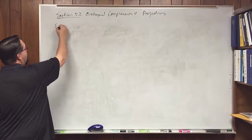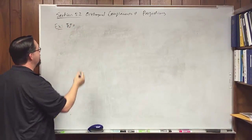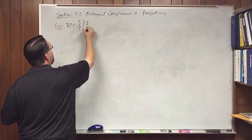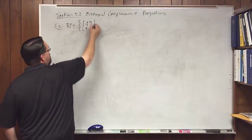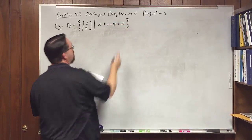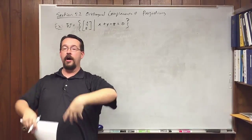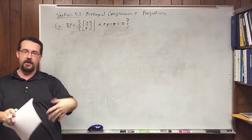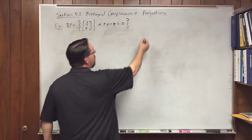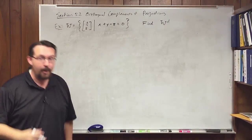Another question you may be asked is if you're given a particular space in R3 with one condition: x plus y minus z equals zero. This is a plane because it's only one constraint on R3 — one linear equation in R3 gives a plane. Our goal is to find the orthogonal complement to that set.